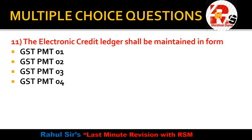Last question — number 11. The electronic credit ledger shall be maintained in which form? Forms given are GSTN, GST PMT-1, GST PMT-2, GST PMT-3, or GST PMT-4. Remember this static portion carefully. The electronic credit ledger is maintained in GST PMT-2.